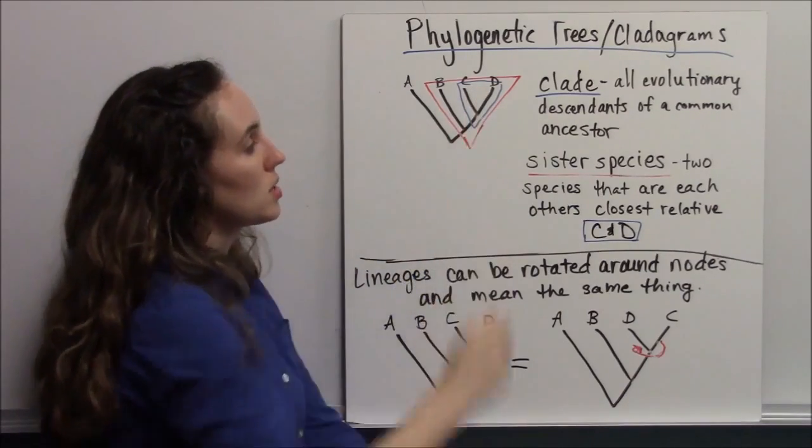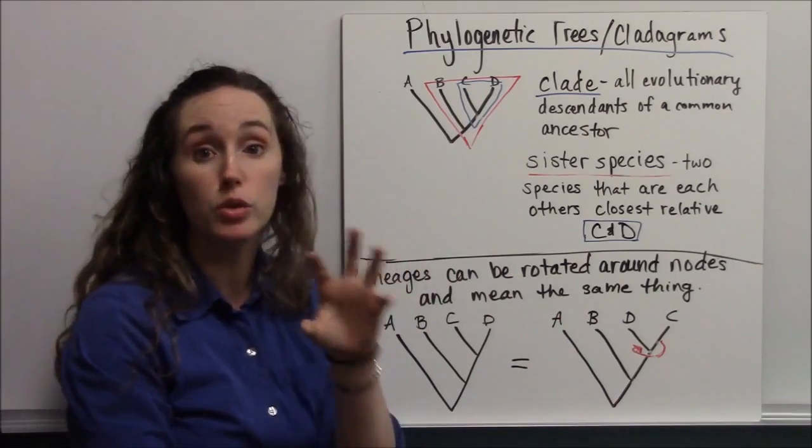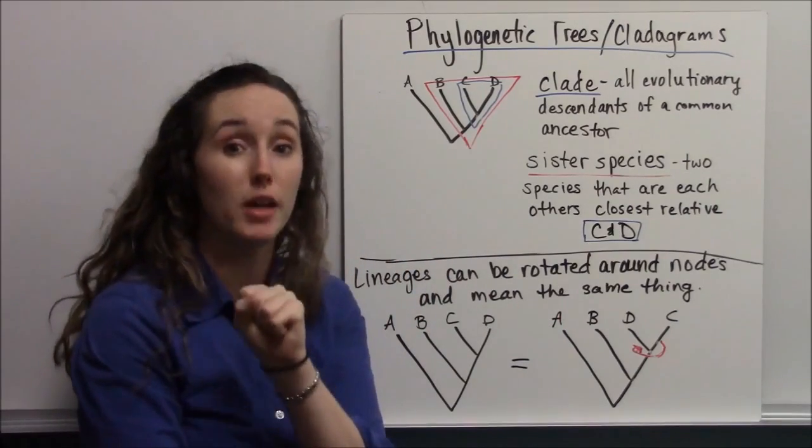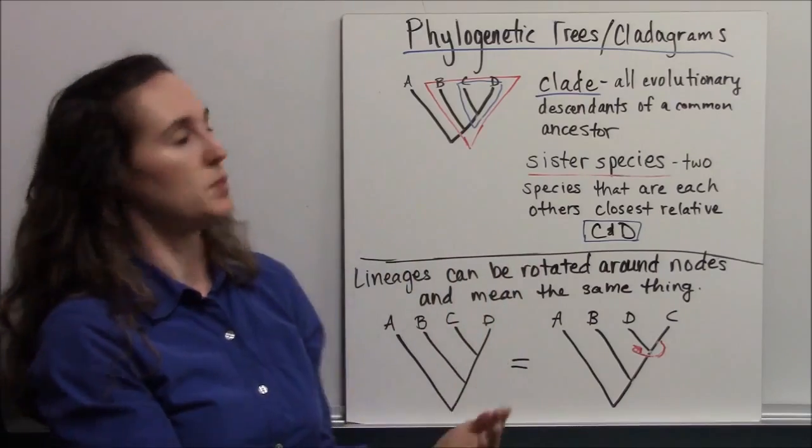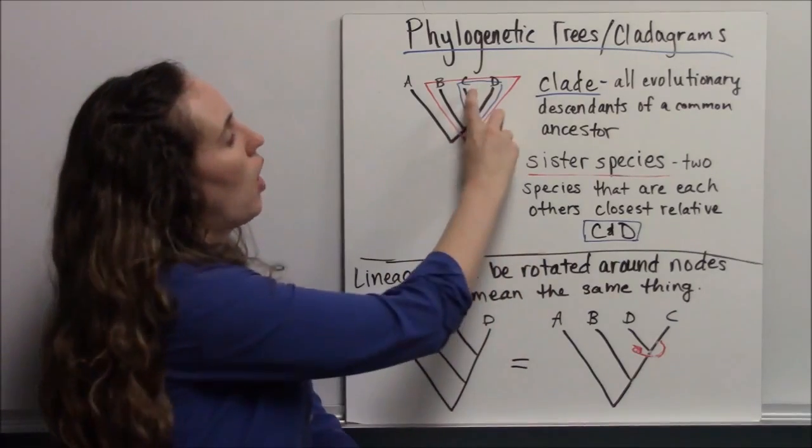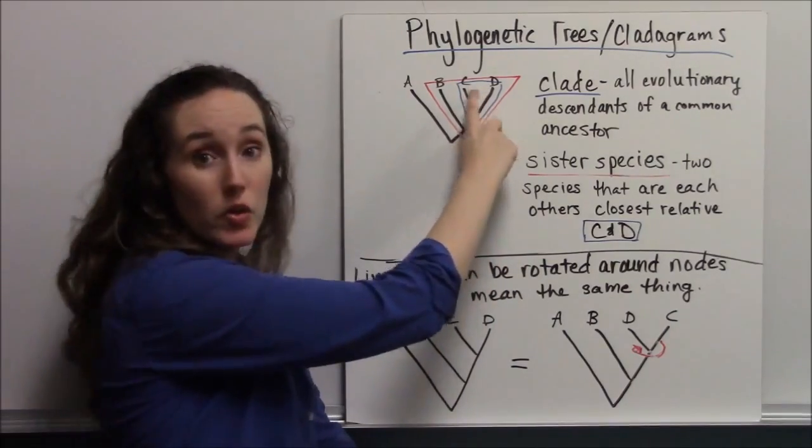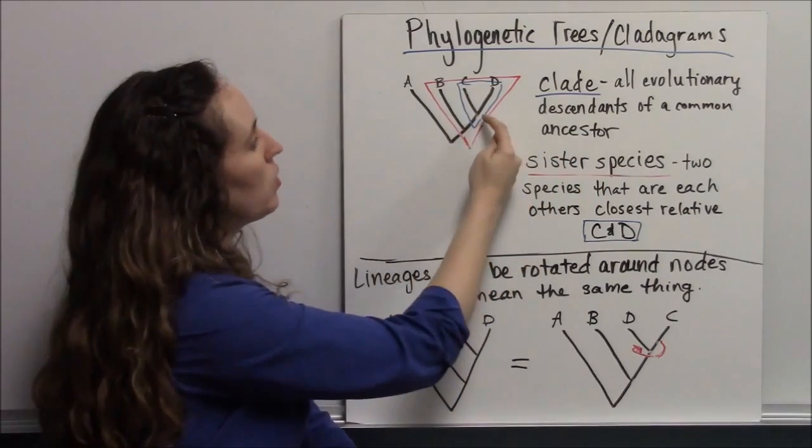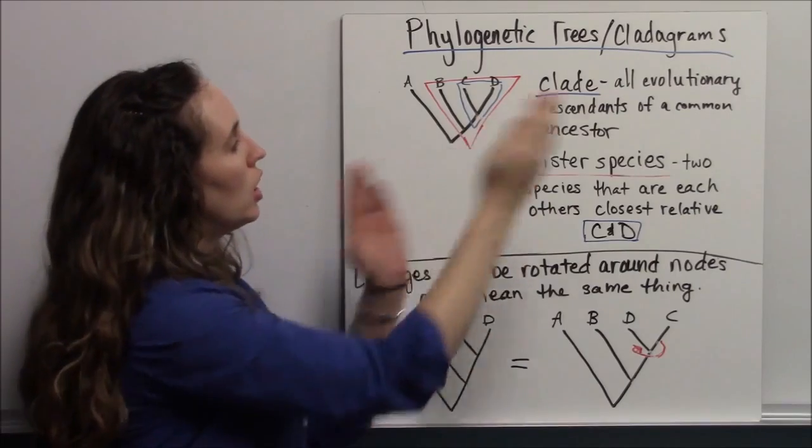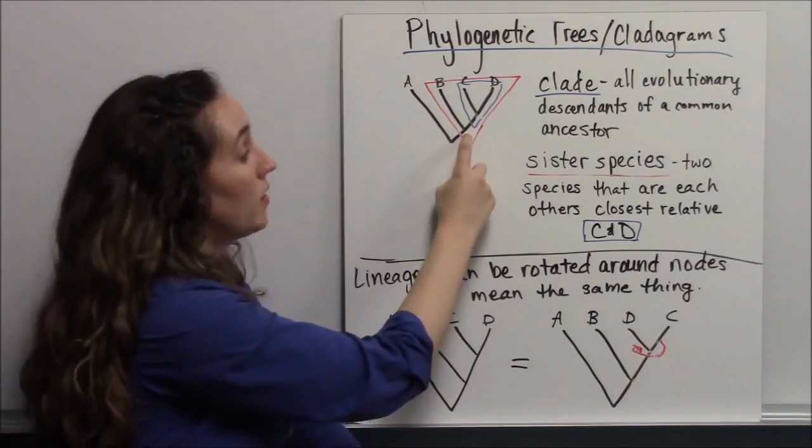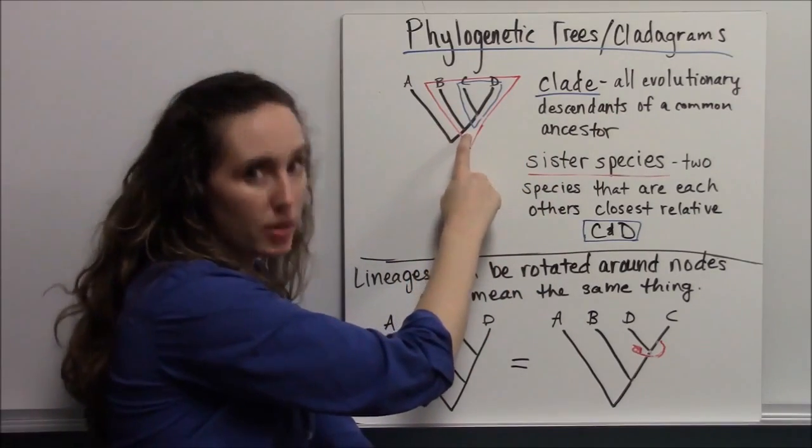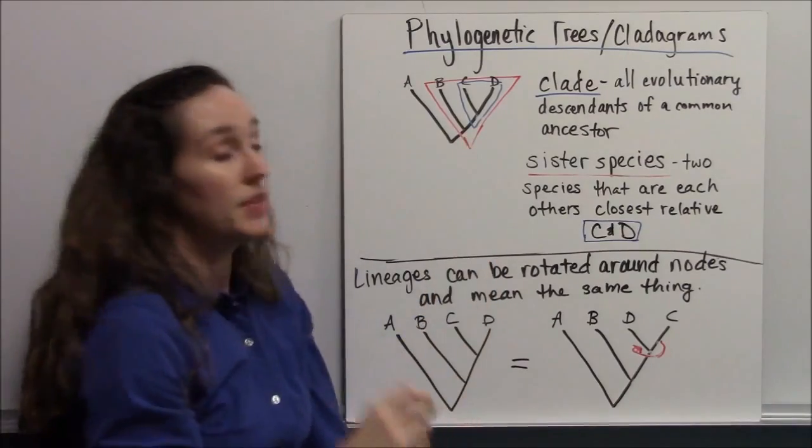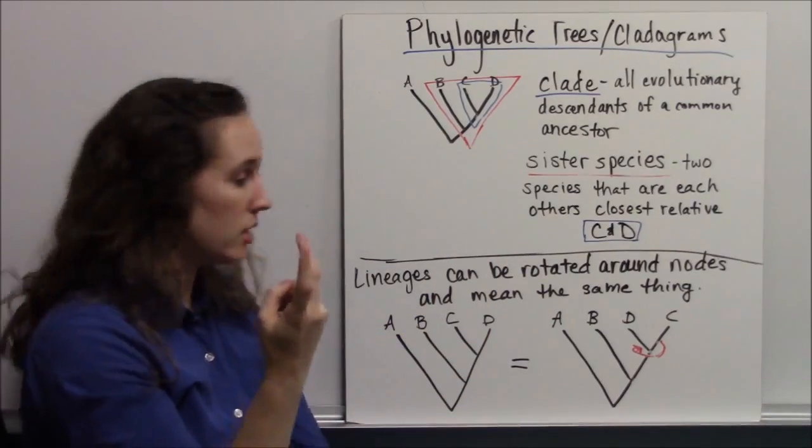These two organisms, since they are the two that are most closely related to each other on the phylogenetic tree, are considered sister species. Sister species are most closely related to each other and are equally different. They're equally derived away from the organisms in the clade before, in the lineage before. This is important to note, especially when you're reading them.